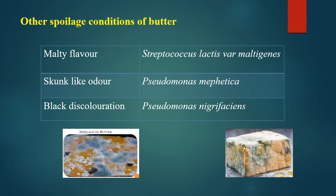Other kinds of spoilage in butter include color and flavor changes. Regarding flavor defects, two common ones are malty flavor caused by Streptococcus lactis var. multigenis, and a skunk-like odor caused by Pseudomonas mephitica. There can also be black discoloration due to Pseudomonas nigrifaciens — wherever it grows it produces black color. These are common odor, flavor, and color changes; further details about flavor defects in butter have been discussed in a separate lecture.